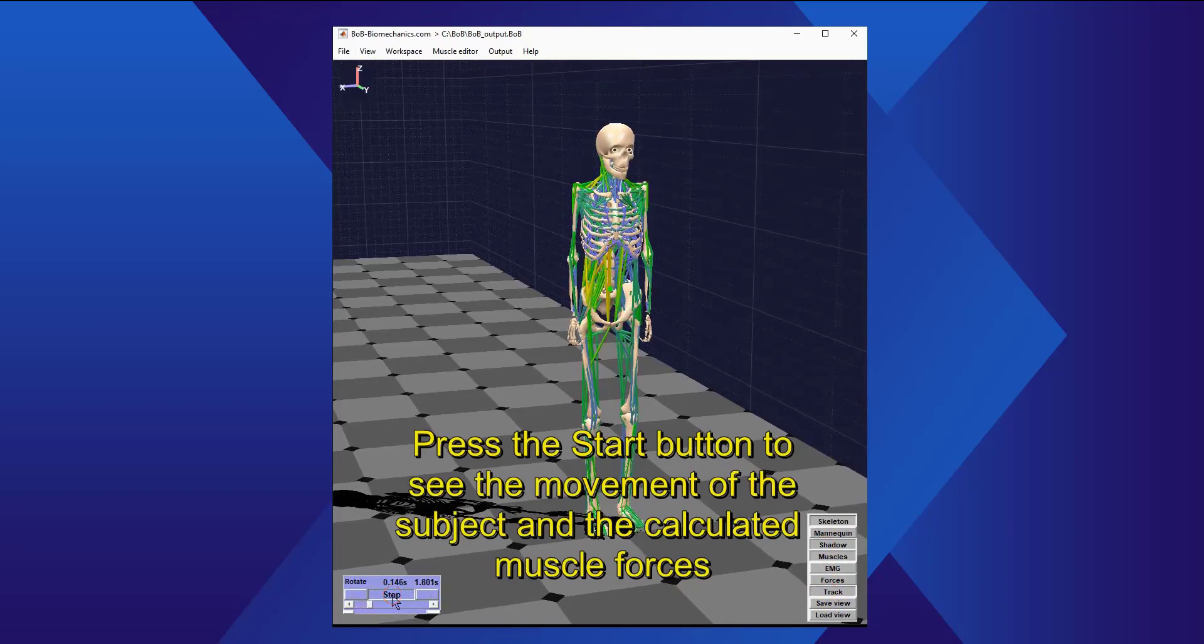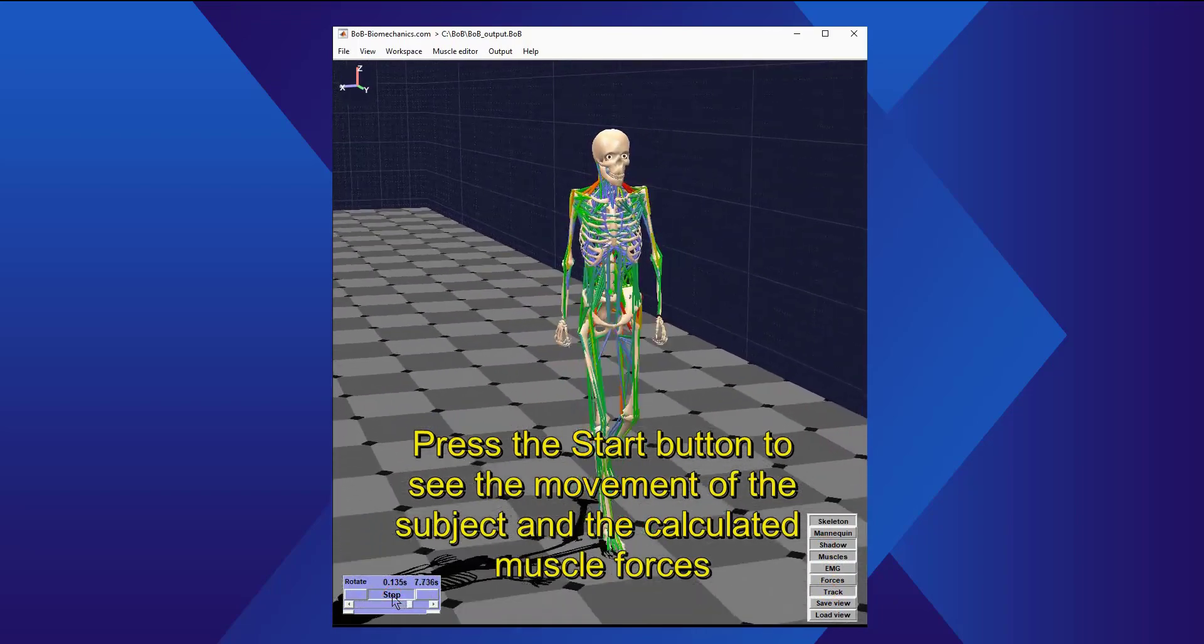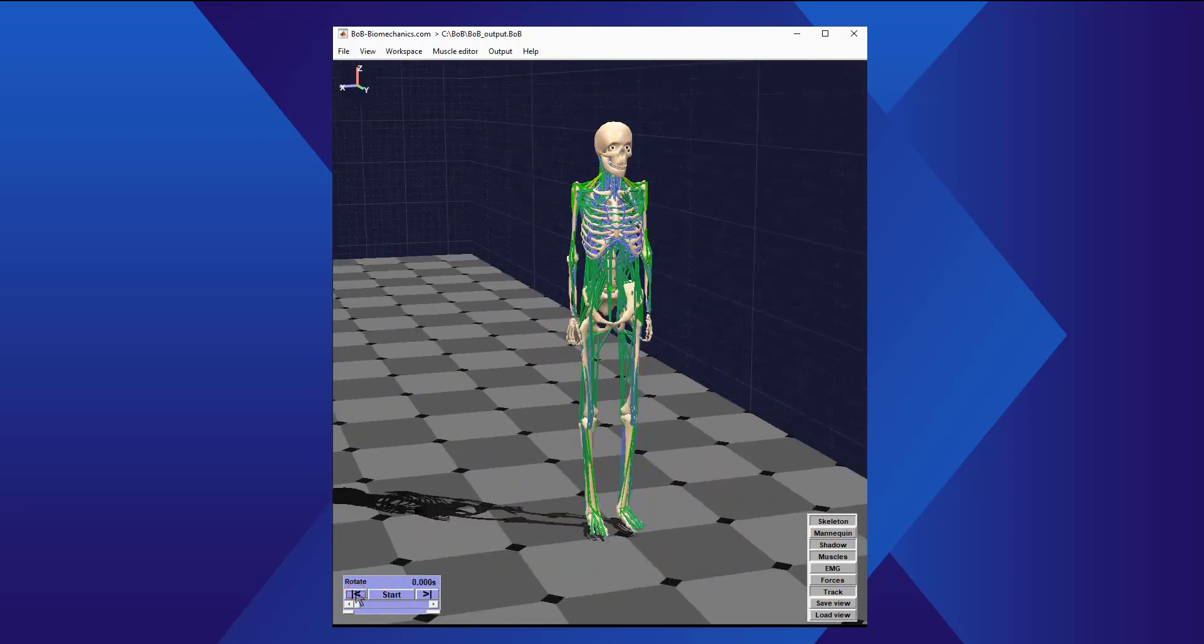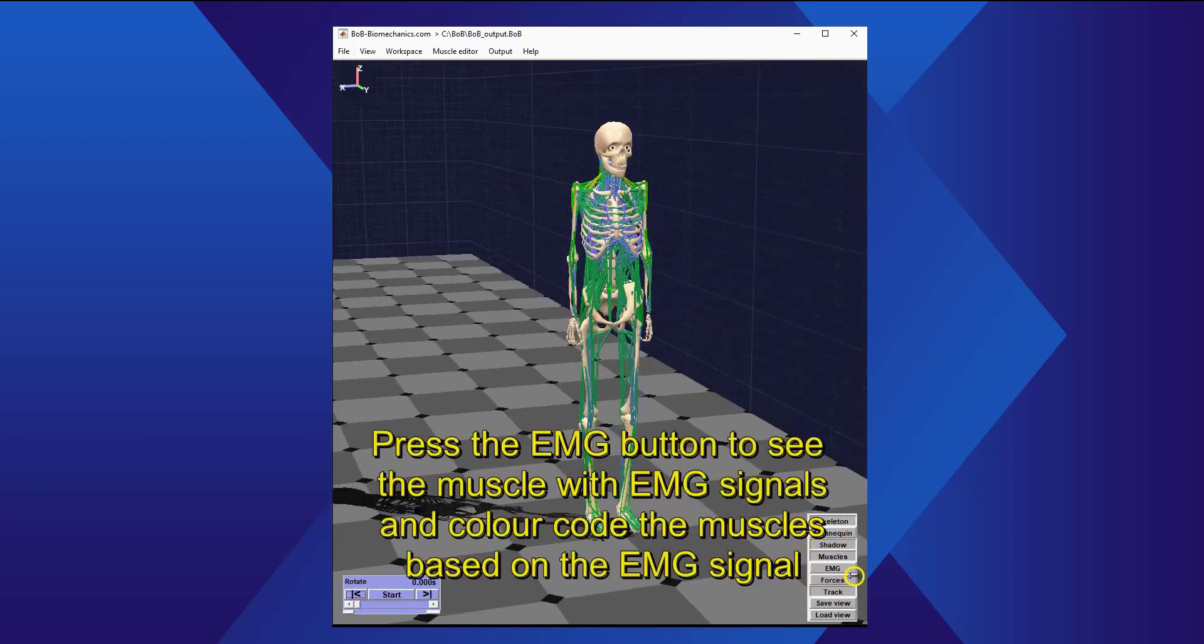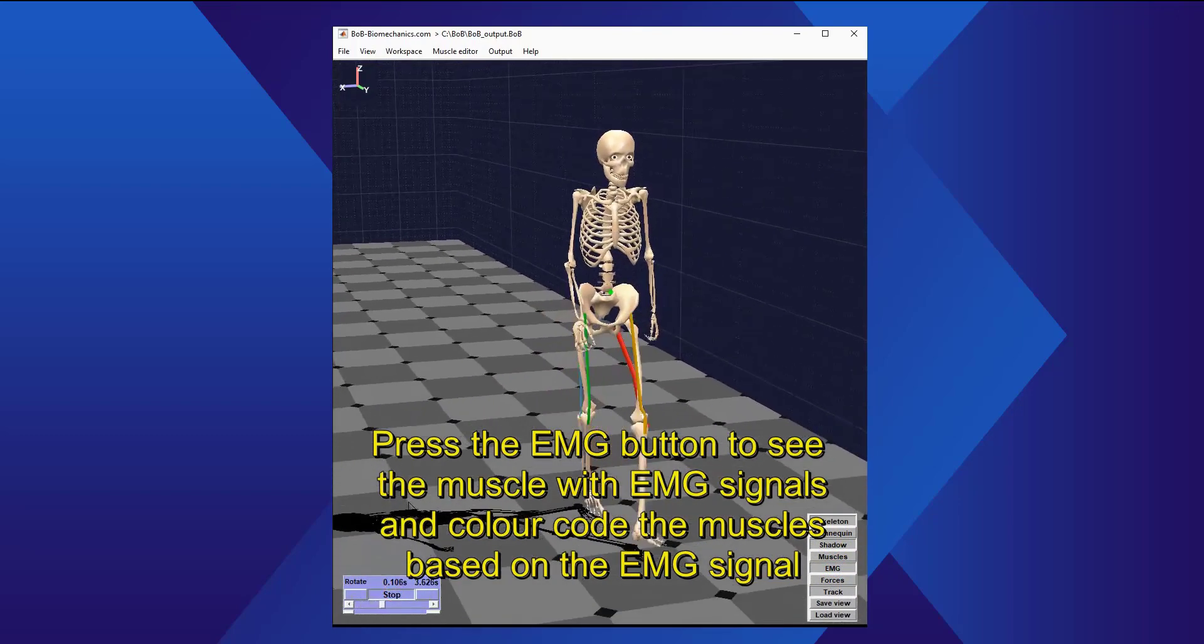Press the Start button to see the movement of the subject and the calculated muscle forces. Press the EMG button to see the muscles with EMG signals and color-code the muscles based on the EMG signal.